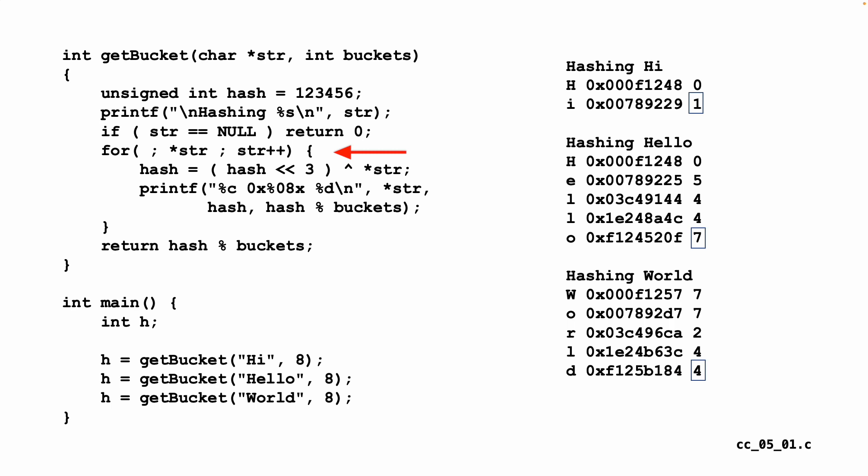We're going to take the current value of hash—in this case we're going to shift it three to the left—and then we're going to exclusive OR it with the character we're looking at. So you can say shift three, exclusive OR, shift three, exclusive OR.